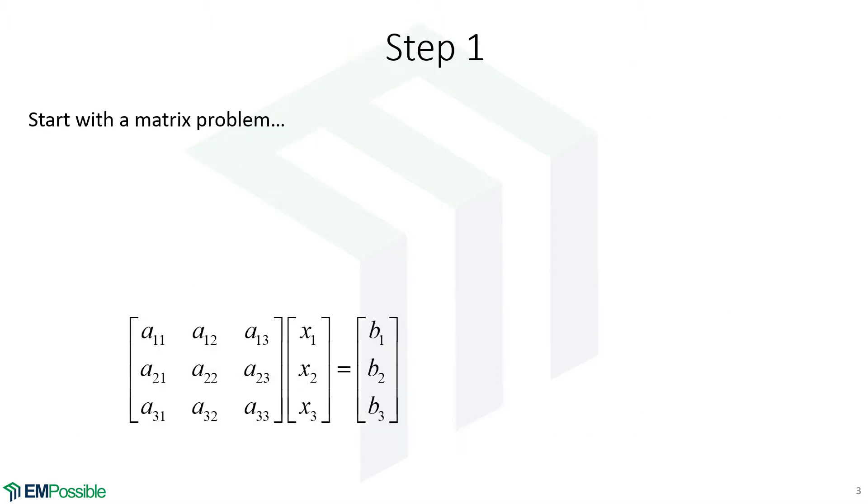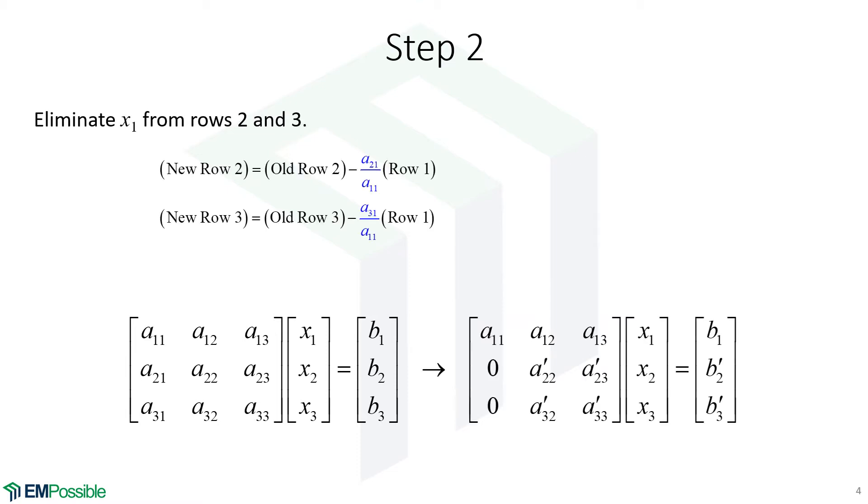We're going to start with a matrix equation. It's a three by three equation. Let's say we would like to solve that. Well, what we want to do first is eliminate X1 from the second and third rows. And the way we'll do that is, first of all, we're going to take this entire row, divide by A11, which is what you're seeing up here. We're dividing by A11. So we normalize the row.